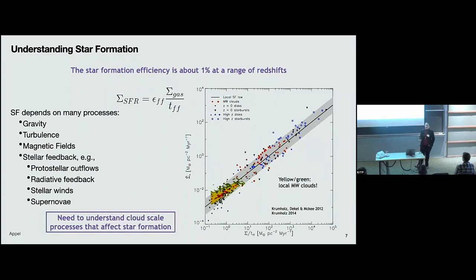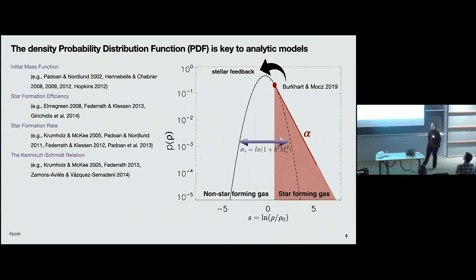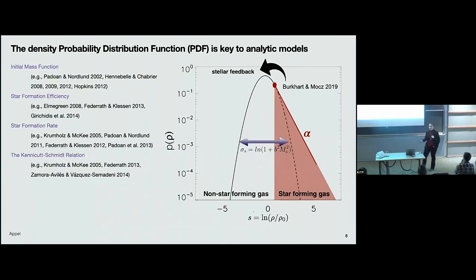One of the ways we can analytically study star formation is by looking at the density PDF — the density probability distribution function. It's one of the key tools in many analytic models and can be used to explain the initial mass function, understand the star formation rate and efficiency, and derive the Kennicutt-Schmidt relation. On the x-axis we have the log of the normalized density — high density this way, low density that way. On the y-axis we measure how much gas is at that density. It's basically a histogram. This tells us how much high-density star-forming gas we have, since stars only form out of the highest-density gas.